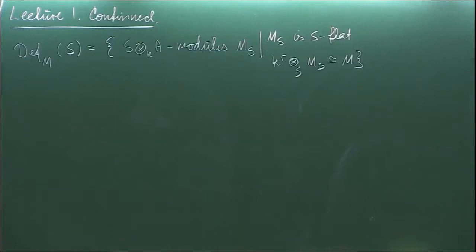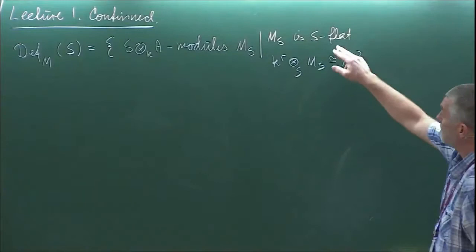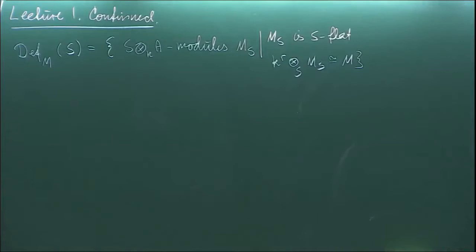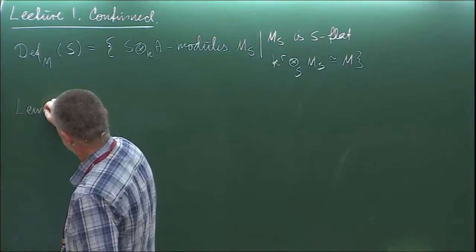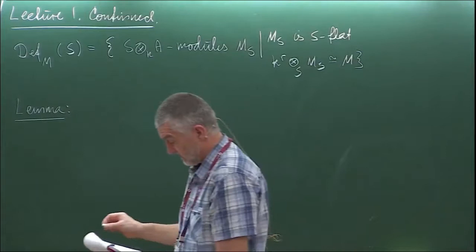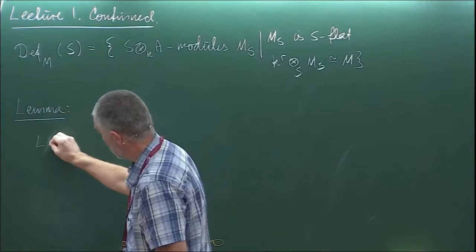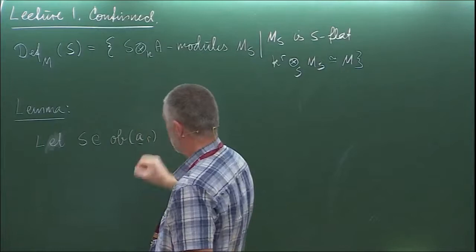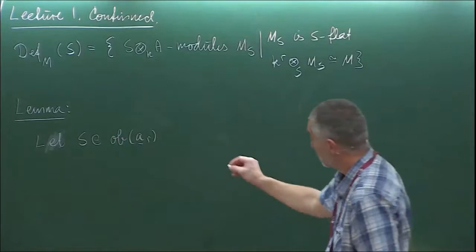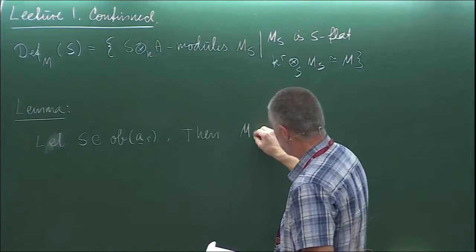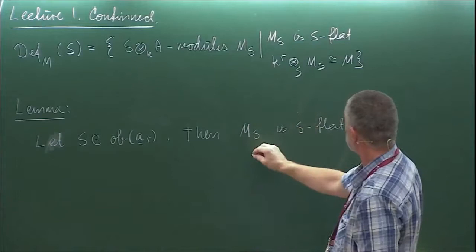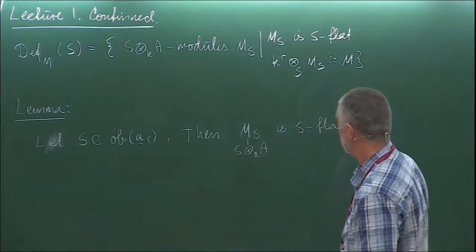M_S is S-flat, and such that K^r ⊗_K ⊗_S M_S is isomorphic to M as an A^r-module. The equivalence — just drop it, you will see it when you need it. The first observation is that flatness replaces continuity in the differential geometric setting.